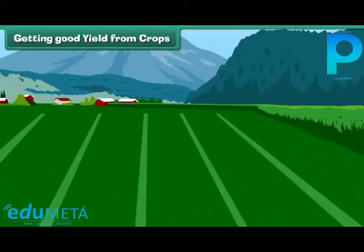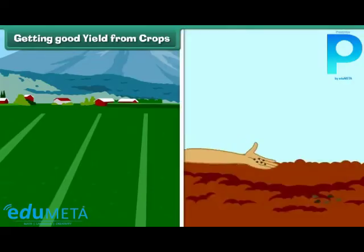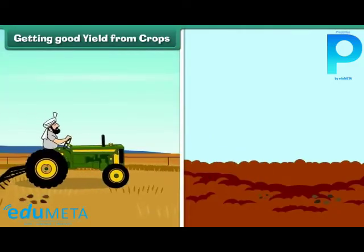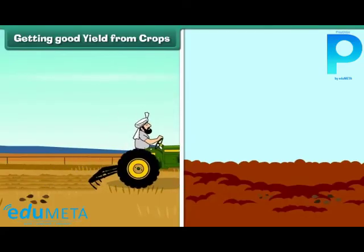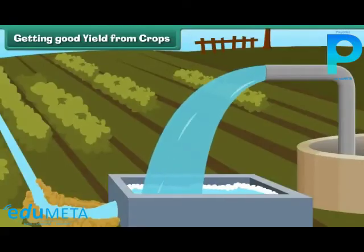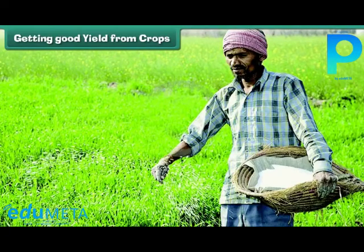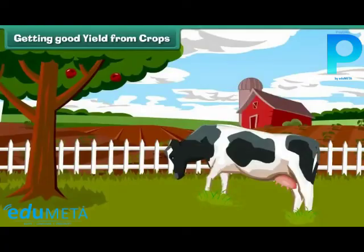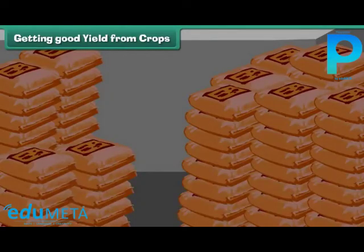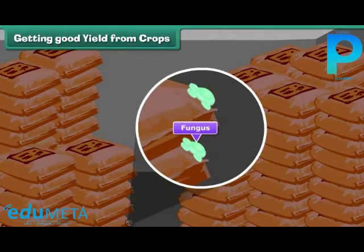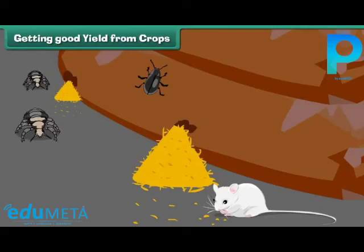Getting good yield from crops: To get a good yield from crops, the following should be kept in mind. Healthy seeds of the best variety should be used. Before sowing, soil should be prepared by plowing and adding manure or fertilizers. Soil should be watered at the right time and with the right amount. Crops should be protected from diseases, harmful insects, and animals. Insecticides and pesticides should be sprayed in correct quantities. Crops should be protected from grazing animals. Harvested crops should be stored properly to protect from moisture, as moisture causes growth of fungi and bacteria. Crops should also be protected from rats, insects, and other animals.